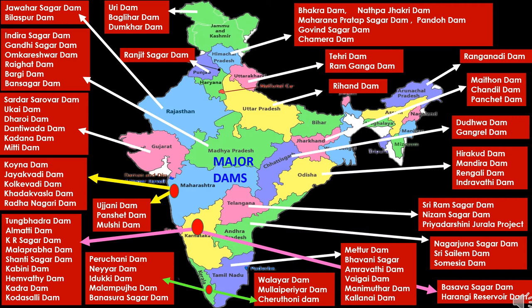In Telangana, first is Sri Ram Sagar Dam, built across the Godavari River in Nizamabad district. Second is Nizam Sagar Dam, constructed across the Manjira River in Kamareddy district — it is the oldest dam of Telangana. Next is Priyadarshini Jurala project in Gadwal district on the Krishna River. In Andhra Pradesh, first is Nagarjuna Sagar Dam, built across the Krishna River, located on the border of Guntur and Nalgonda districts. Second is Srisailam Dam on the Krishna River in Kurnool district. Third is Somasila Dam on the Penna River in Nellore district.